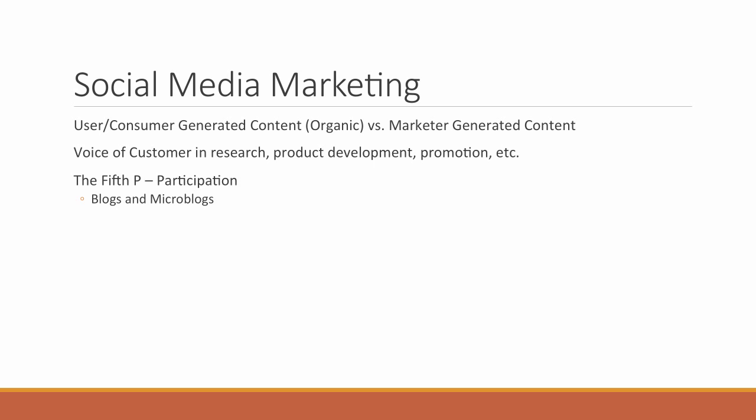We've talked about product, price, place — which we refer to as supply chain management — and promotion, which we refer to as integrated marketing communications. The fifth P of marketing is getting customers to participate in your brand, largely through social media marketing. Some ways they might participate would be through blogging and microblogging — Twitter is really a microblog, essentially a headline for attachments that include additional information — as well as video blogs and video sharing on YouTube and other platforms.